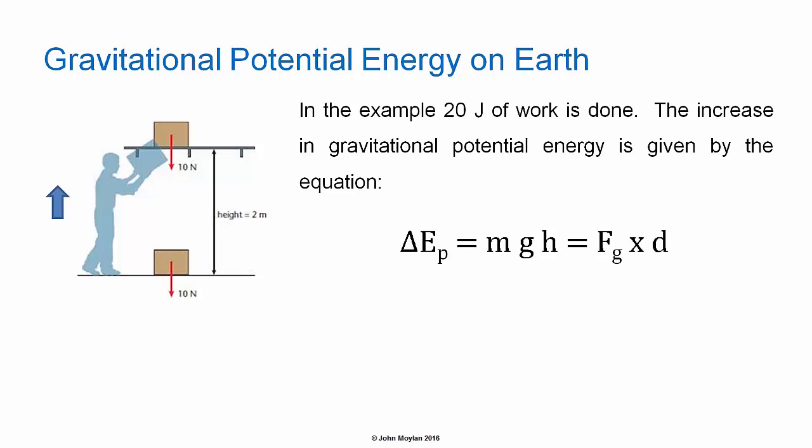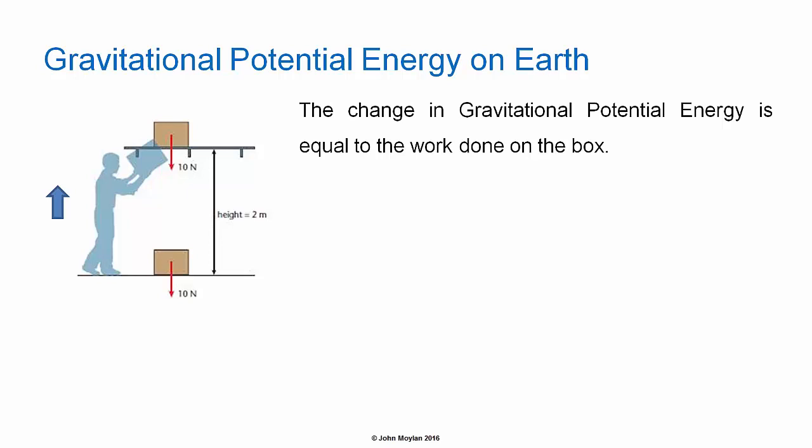Where m is the mass of the box in kilograms, g is acceleration due to gravity in meters per second squared, and h is the vertical distance through which the box is moved. This equals F subscript g, the force due to gravity in newtons or the weight of the box, multiplied by d, the vertical distance through which the box is lifted in meters, which equals 10 newtons by 2 meters, equals 20 joules.